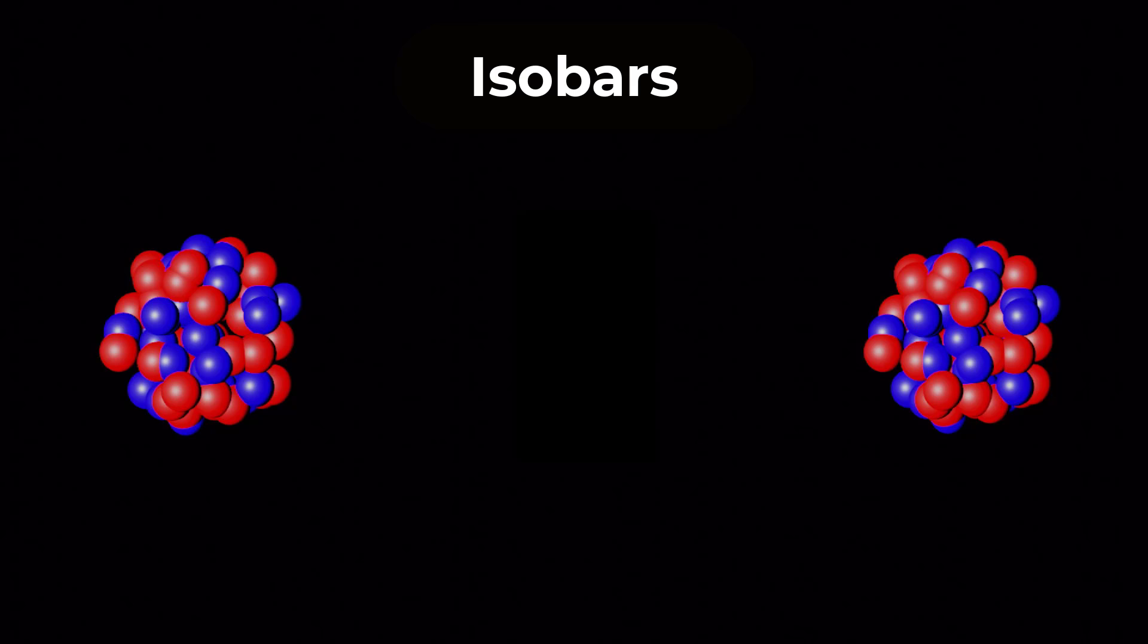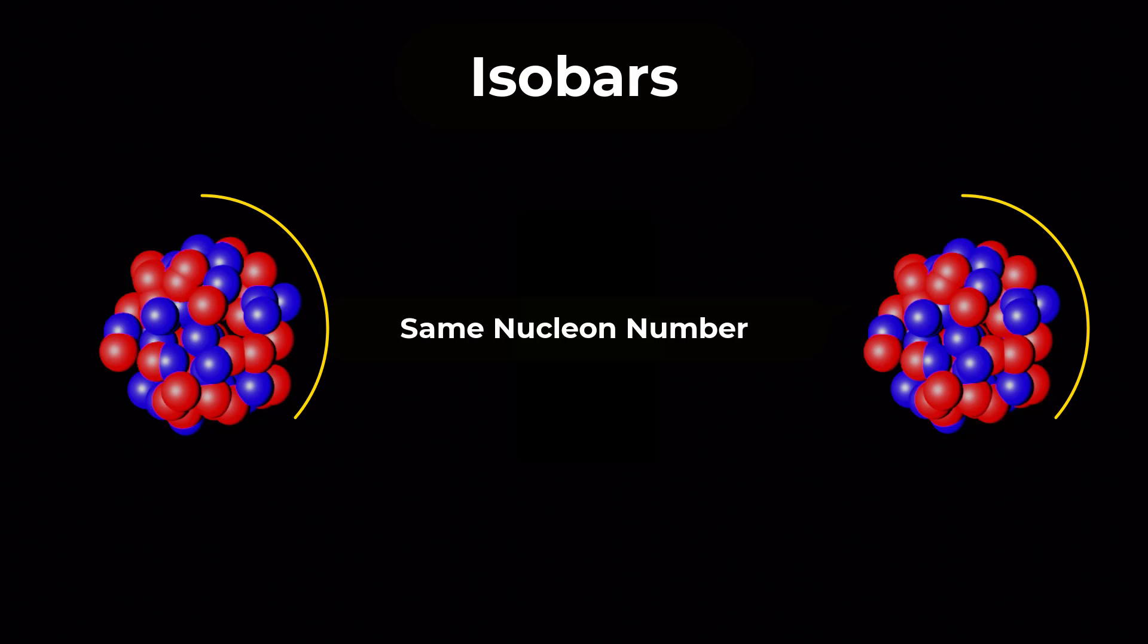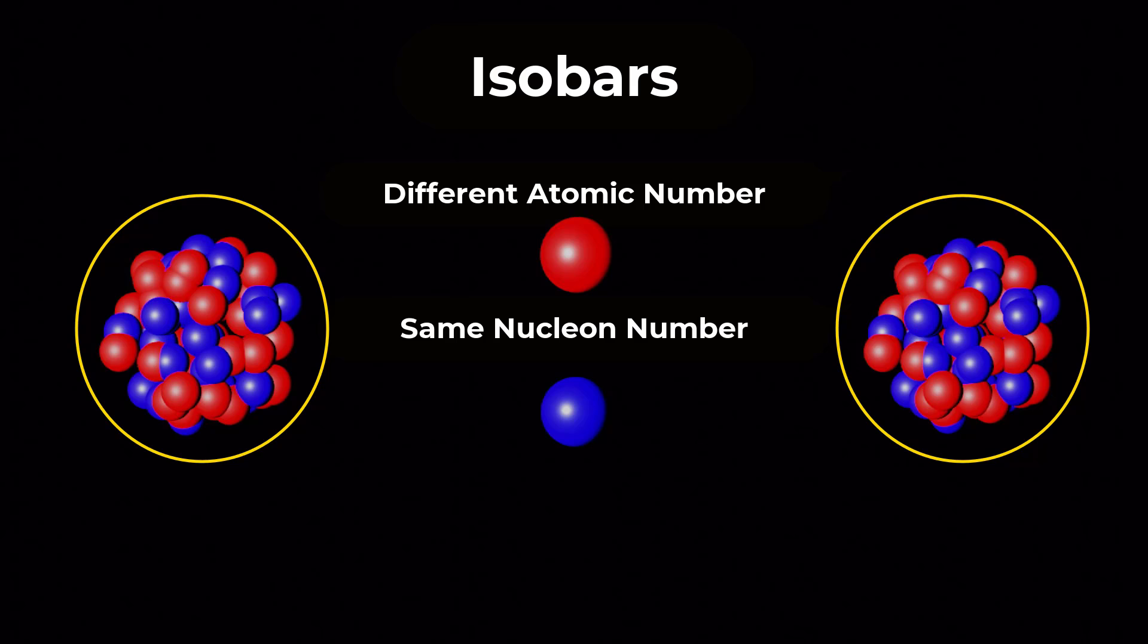Isobars, on the other hand, are atoms that have the same number of nucleons but different atomic numbers. This means they belong to different elements.